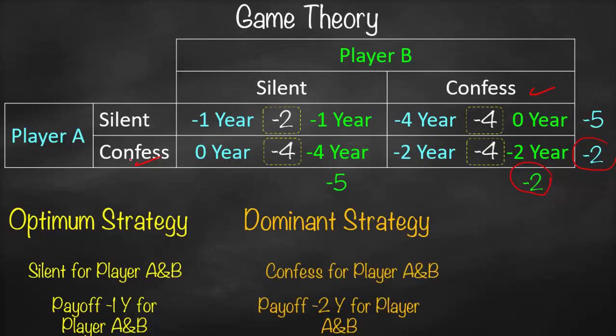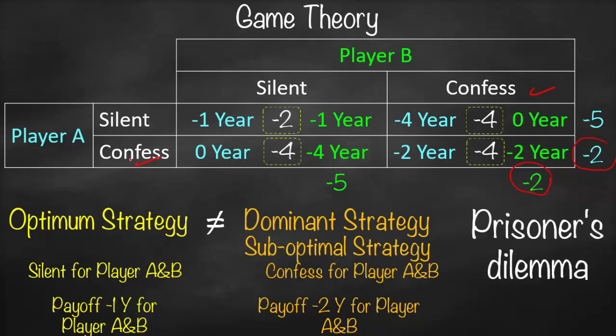With the dominant strategy of confessing, each player gets two years in prison. But is this the optimum? We know the optimal strategy is for both to stay silent. However, since they cannot collaborate and each is afraid the other will cheat, both end up confessing. Therefore, the dominant strategy is a sub-optimal strategy. Because the dominant strategy does not equal the optimal strategy, we have the prisoner's dilemma — the dominant outcome is sub-optimal, meaning it is not equal to the optimum.